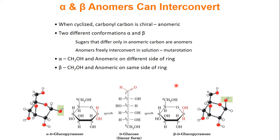The anomeric carbon can be in the alpha position or the beta position. The way to know if something is alpha or beta: first find the anomeric carbon and see what direction your hydroxyl group is pointing, then compare that to what direction the CH₂OH of carbon-6 is pointing. If the CH₂OH and the OH of your anomeric carbon are pointing in opposite directions, we call that an alpha sugar or alpha anomeric carbon. However, if they're pointing in the same direction, we call that beta.